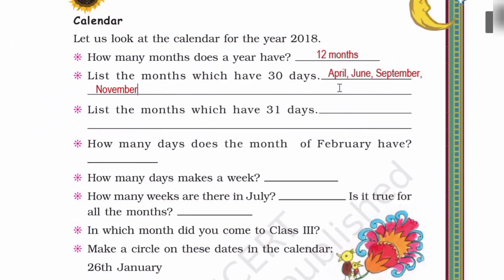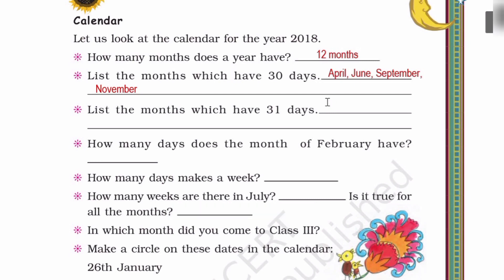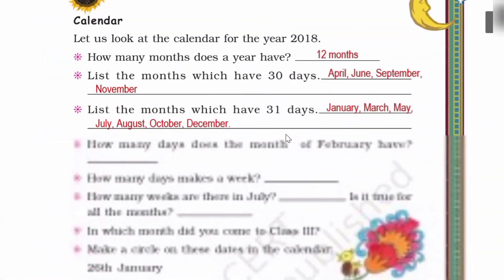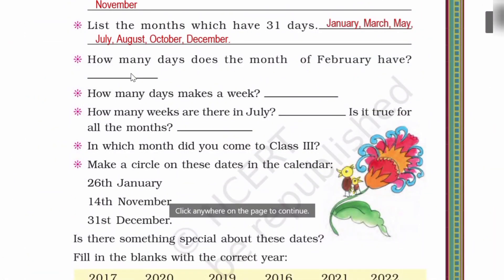So here you can write months with 30 days: April, June, September, November. Now list the months which have 31 days: January, March, May, July, August, October, December. Now how many days does the month of February have? February 28 days. So write 28 days.